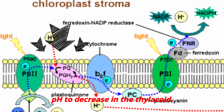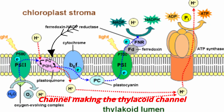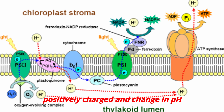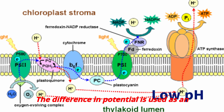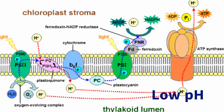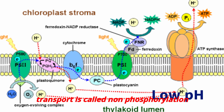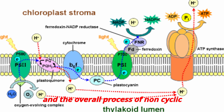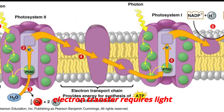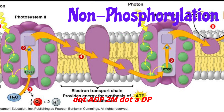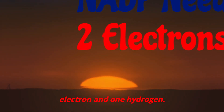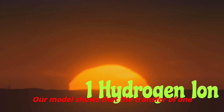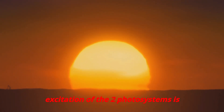When plastoquinone-H is reoxidized to plastoquinone, these hydrogen ions, along with those released from the oxidation of water, cause the pH to decrease in the thylakoid channel, making it positively charged. The pH changes from 5 to 8, which is 1000 times higher than the stroma. The difference in potential is used as an energy source to synthesize ATP. The formation of ATP by non-cyclic transport is called non-cyclic photophosphorylation. Reduction of NADP⁺ to NADPH requires two electrons and one hydrogen ion. The transfer of one electron from water to NADP⁺ requires photons because excitation of two photosystems is required.